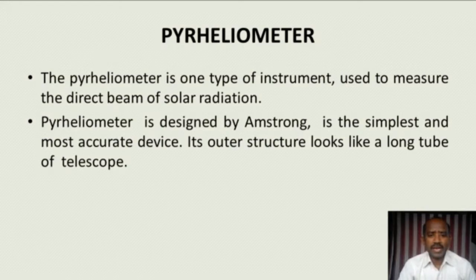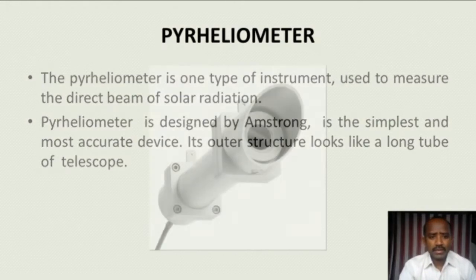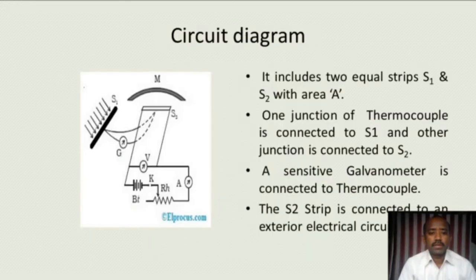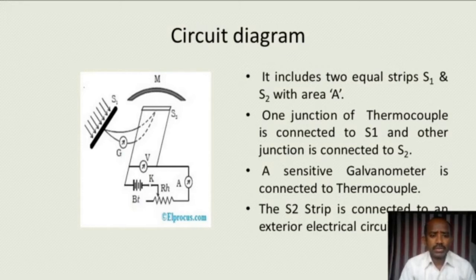The pyrheliometer was designed by Armstrong and it looks like a long tube telescope. This is a picture of that pyrheliometer. In the circuit diagram, it contains two strips S1 and S2. S1 is blackened. One junction of the thermocouple is connected to S1 and another junction is connected to S2.